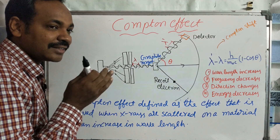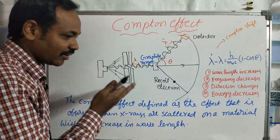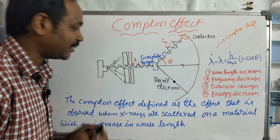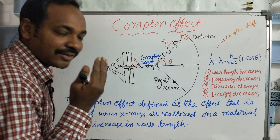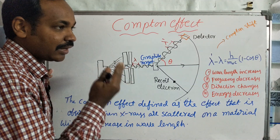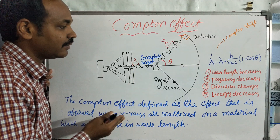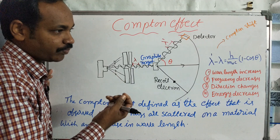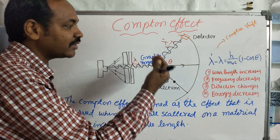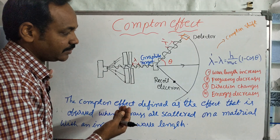The Compton Effect challenged classical mechanics because it is a quantum mechanics concept. In classical mechanics, electromagnetic waves interact with light and charged particles, and the observation would be that they release radiation of the same wavelength. But that classical mechanical concept is not what we actually observe.